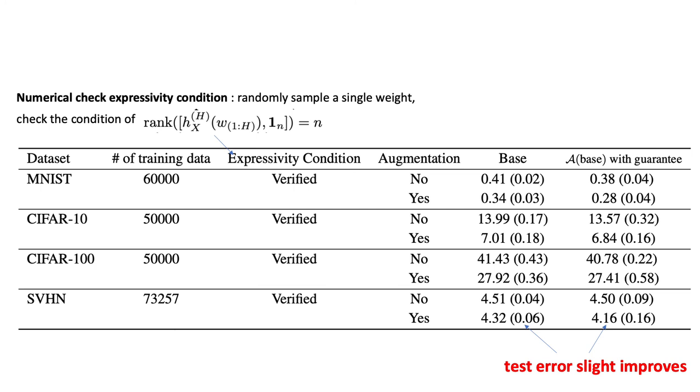A natural question is, what about test error? What about generalization? We also look at the test error for each dataset for both the data augmentation case and the non-data augmentation case. We can see in all these examples, our modified algorithm has slightly better error than the original base algorithm. Of course, we don't have a theory yet about the generalization perspective.